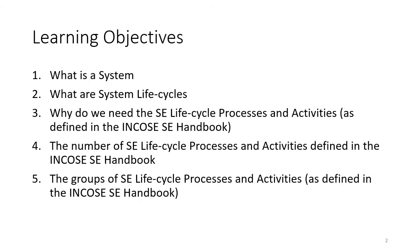The learning objectives for this introductory video are: What is a system? What are system life cycles? Why do we need system engineering life cycle processes and activities as defined in the INCOSI System Engineering Handbook? The number of SE life cycle processes and activities — hint, it's 59 as defined in the handbook — and the groups of these life cycle processes and activities, which is seven. The 59 life cycle processes and activities are grouped into seven categories or seven groups.